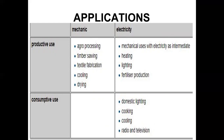Applications include both mechanical and electrical uses: for production — agro production, textile fabrication; for mechanical use — heating and lighting for a small community; for consumption — lighting, cooking, and cooling. A micro hydro power plant is an asset that allows you to generate your own power and use it.